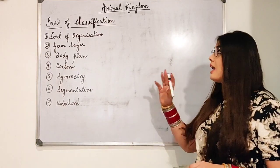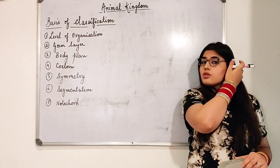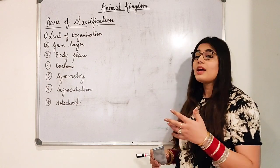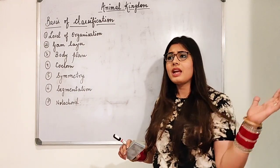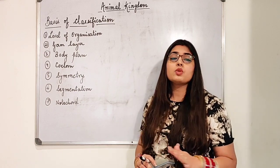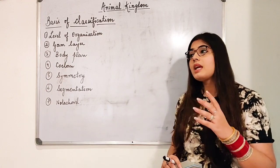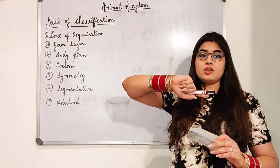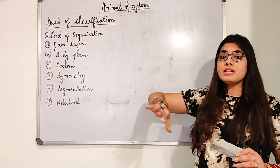Now let's get started with the basis of classification. What do you mean by basis of classification? In Part 1 we studied what is the need to classify — the answer was that there is so much diversity of living organisms that if we do not classify them, we won't be able to understand the features of any of them. So we need to classify them into groups; it makes our job easier and less time-consuming. Now, what is the basis of classification?